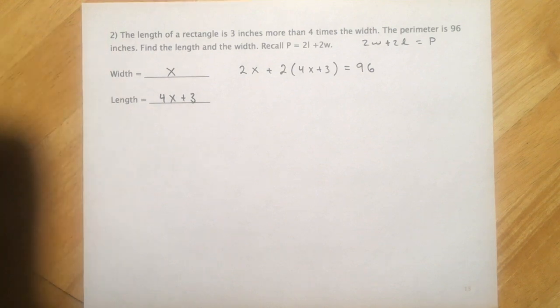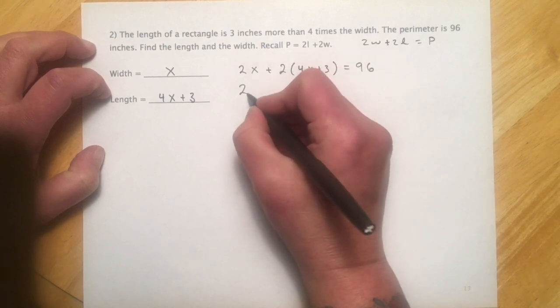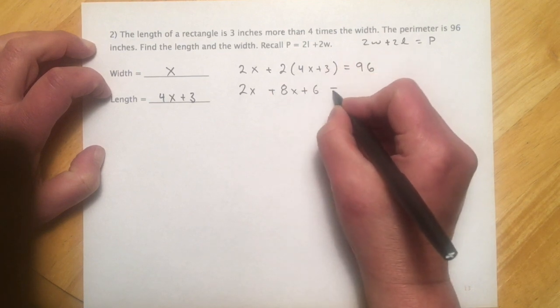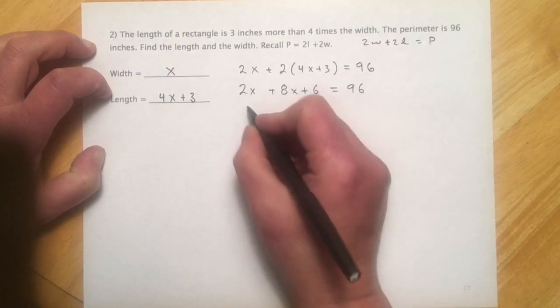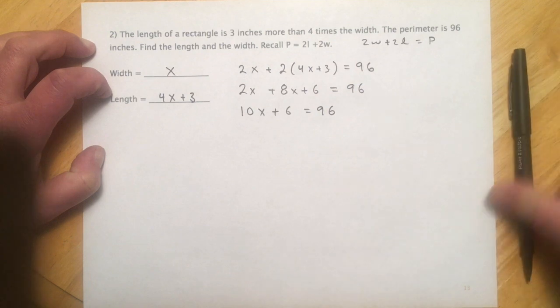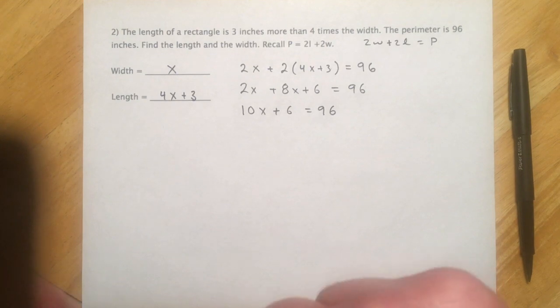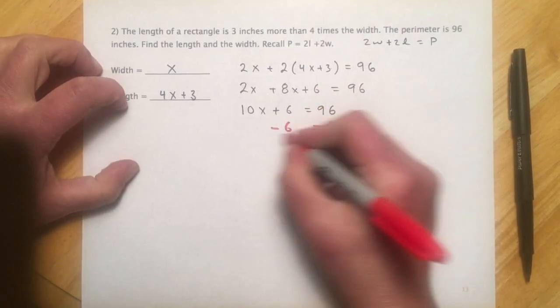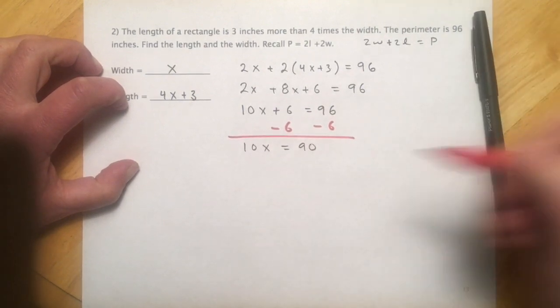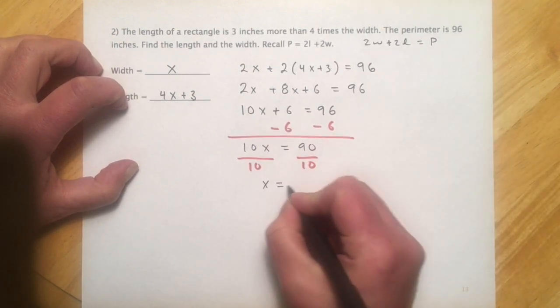So now that we've got our algebraic expression, we can clean this up and solve for x. So 2x plus 2 times 4 is 8x, 2 times 3 is 6 equals 96. 2 and 8, that's going to give me 10x plus 6 equals 96. Now it's simplified: subtract, multiply, divide. I'll take the 6 over and 10x equals 90 and divide out that 10.